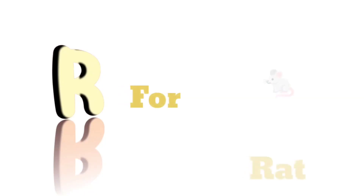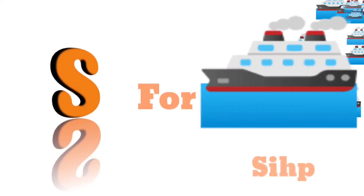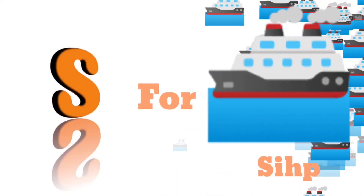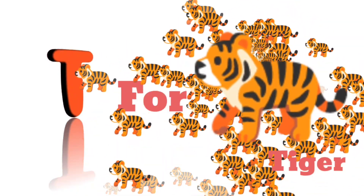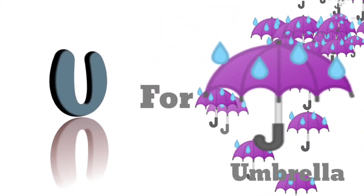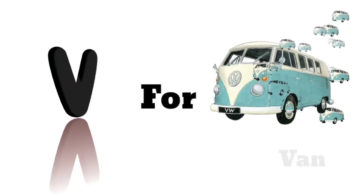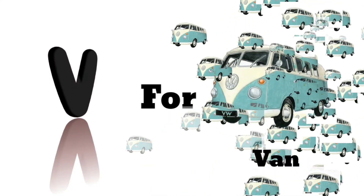R for rat, S for sheep, T for tiger, U for umbrella, V for van.